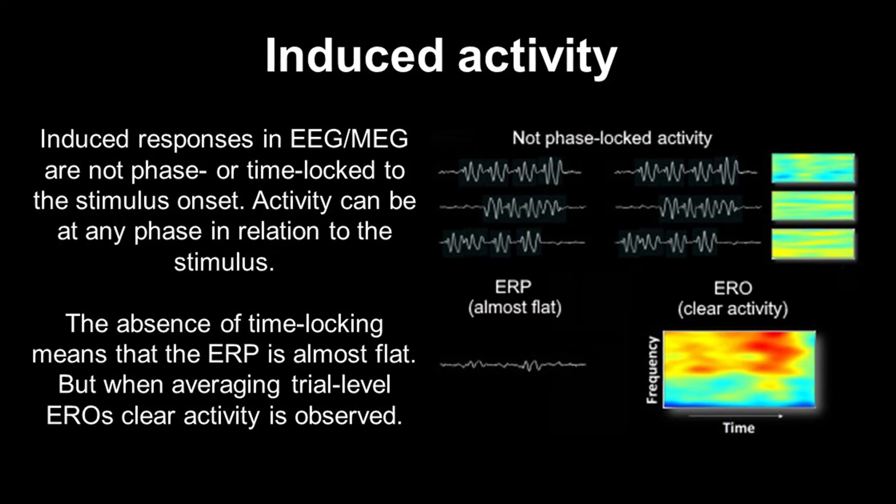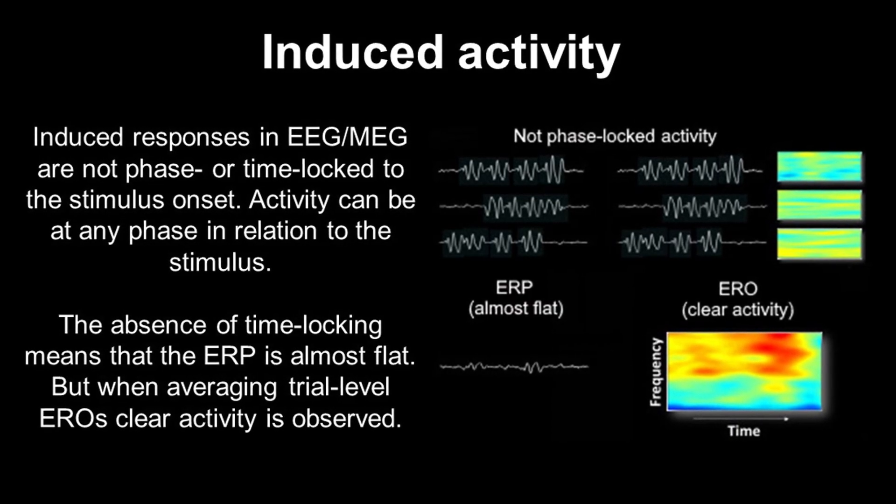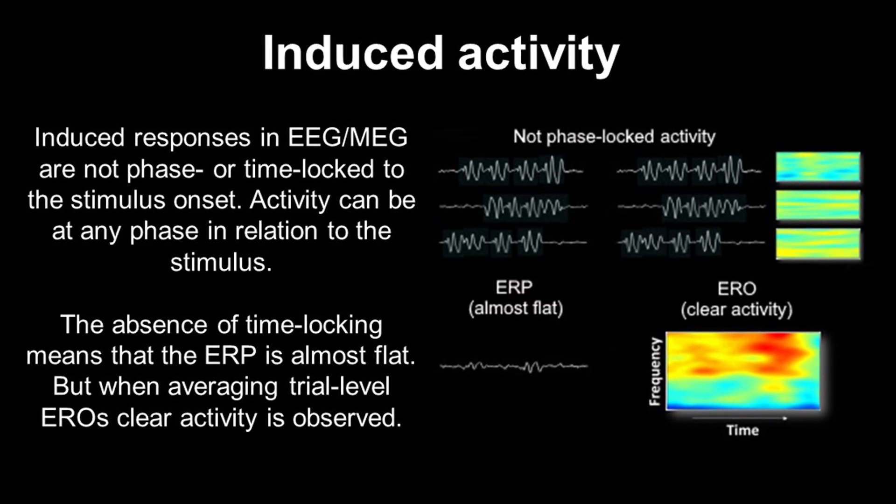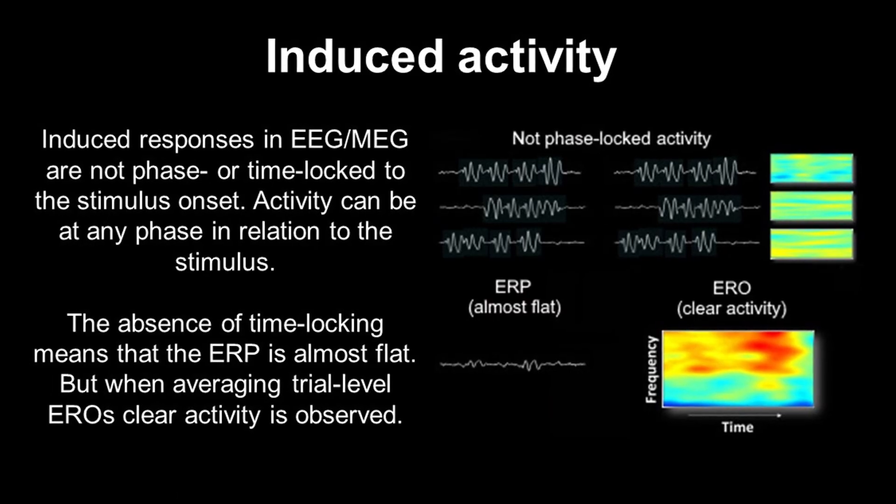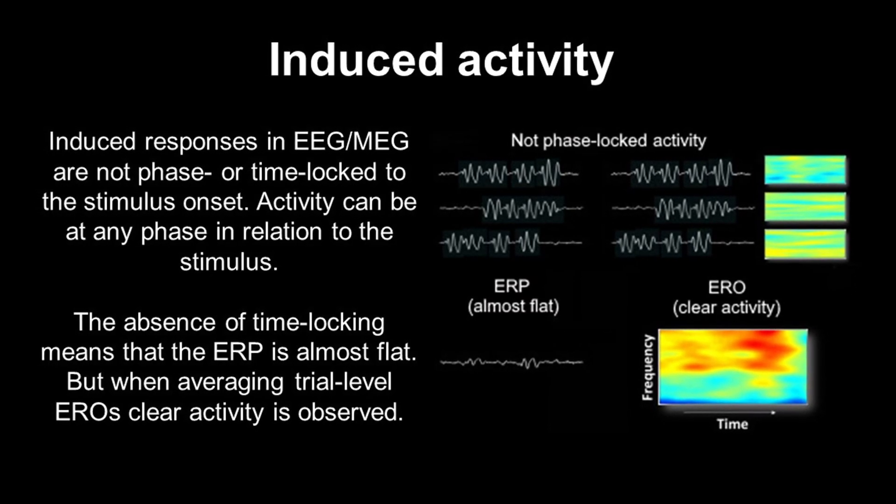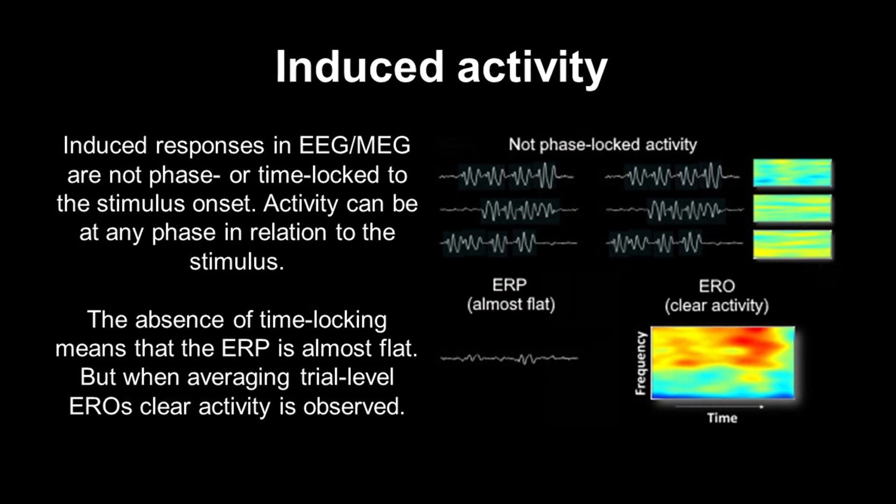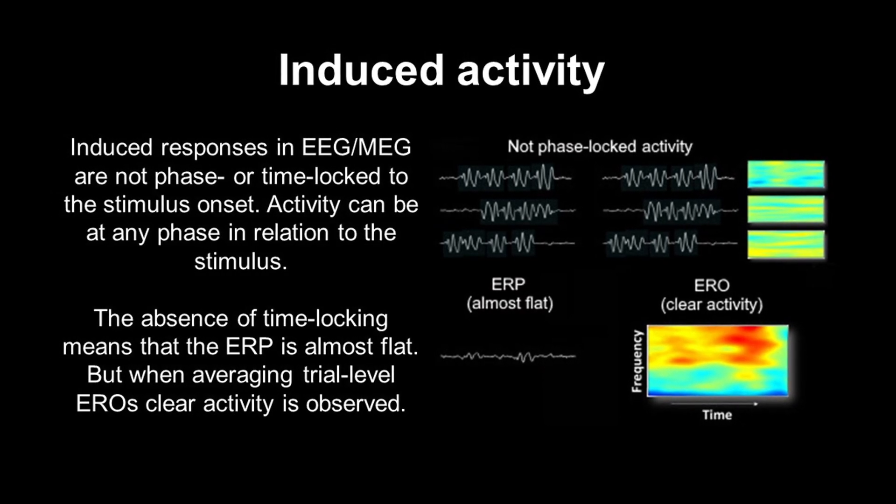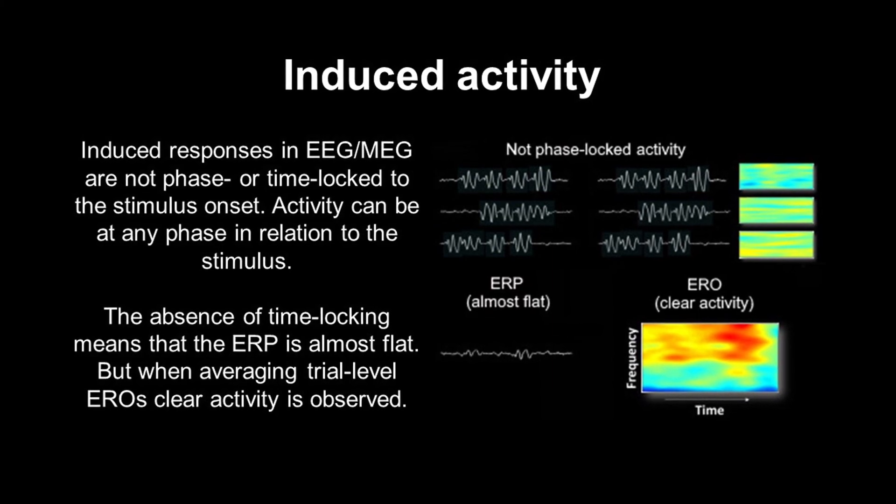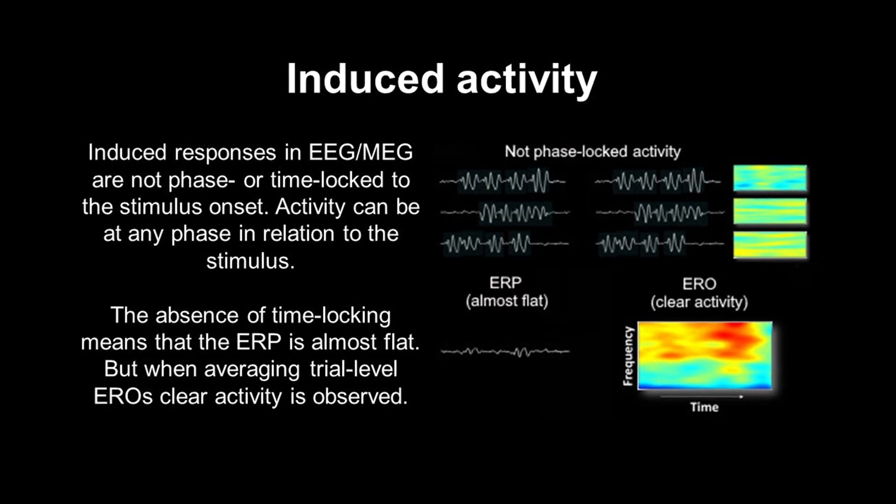Now when we look at the time domain, at the onset of the stimulus, the gamma could be at the peak, or the trough, or somewhere else in the oscillation. So by just averaging the time signals, we wouldn't get a clear deflection, and no specific ERP components. But when using a time-frequency analysis for each trial, and then averaging that, we can see a clear event-related oscillation.